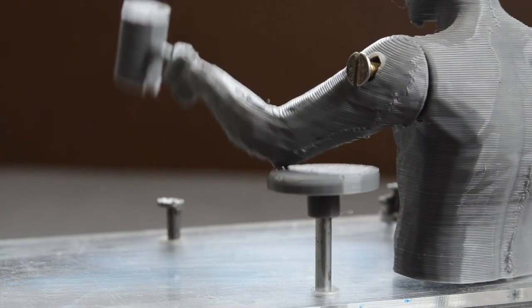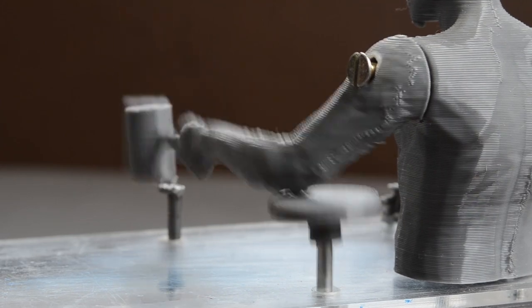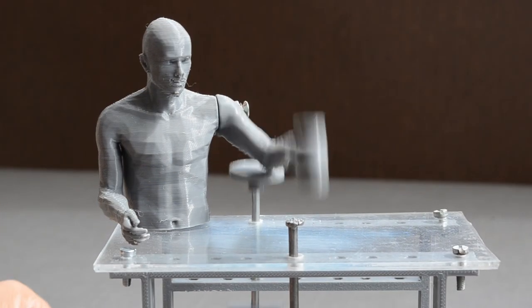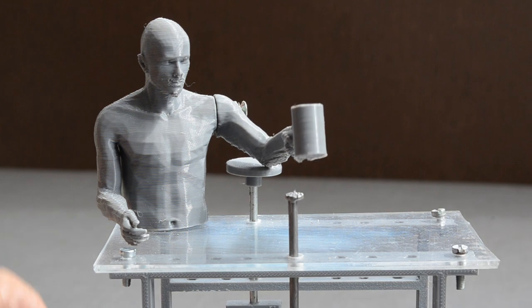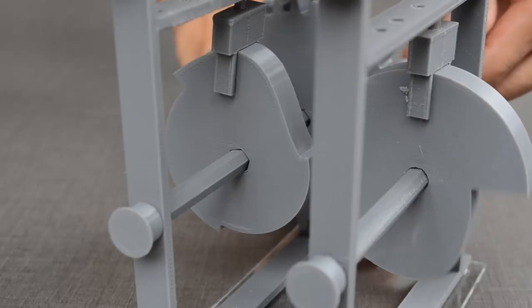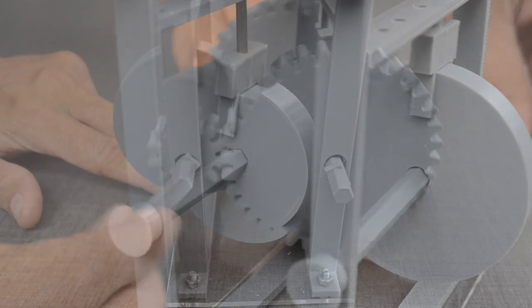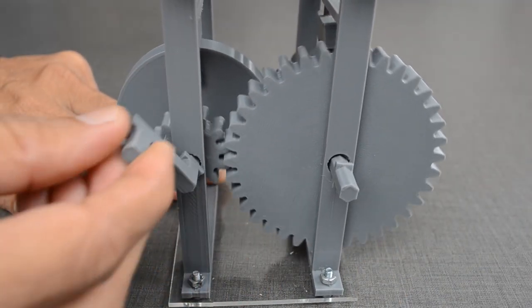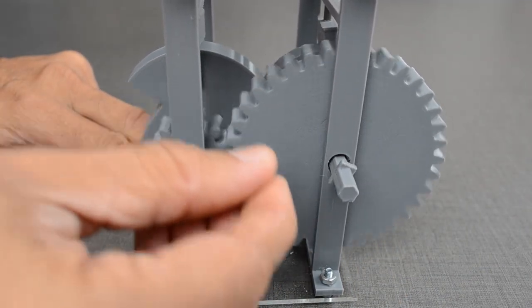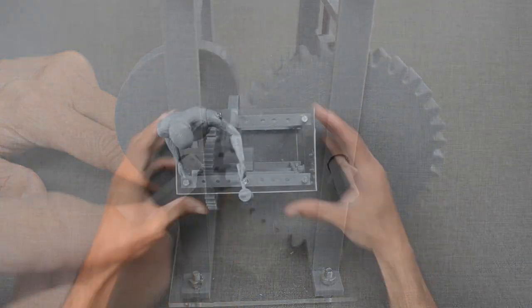This hammer man is built with 3D printed parts. Coordinated movement between hammer and nail is made possible with the help of cams and gears. Let us take it apart to know more about each part.